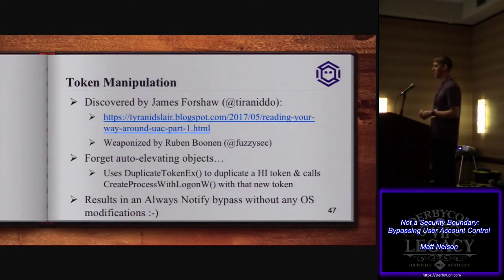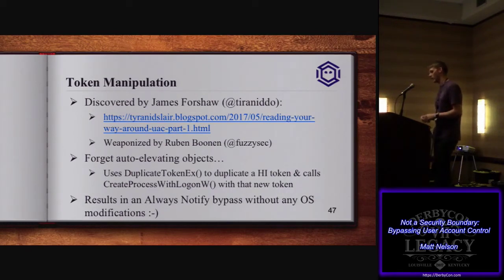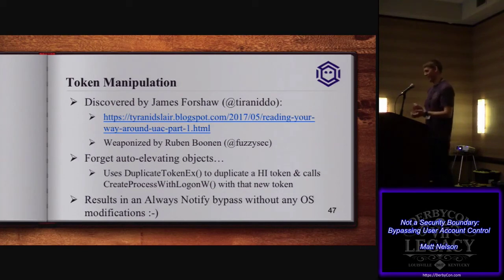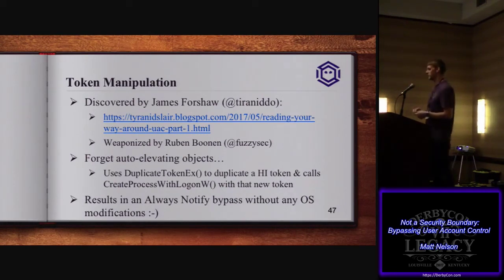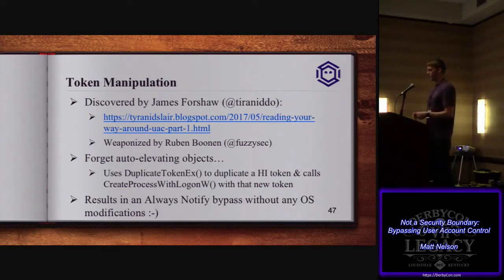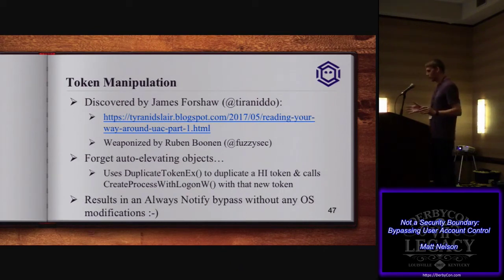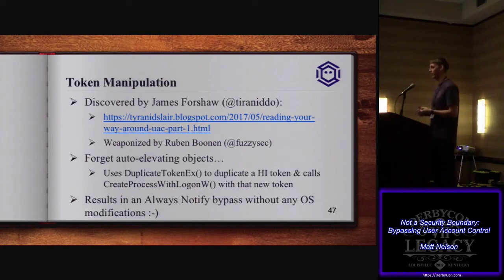This is the one I want to spend the most time on, because all those cool primitives don't really matter anymore. Bypass research for UAC at this point, in my honest opinion, does not matter. James Forshaw did a three-part blog series on reading your way around UAC — this puts the nail in the coffin as far as elevation goes. This technique gets around any version of UAC that's set, including always-notify. With this technique, you can forget finding auto-elevating objects, forget finding binaries with auto-elevate set to true, forget finding scheduled tasks that auto-elevate for you.